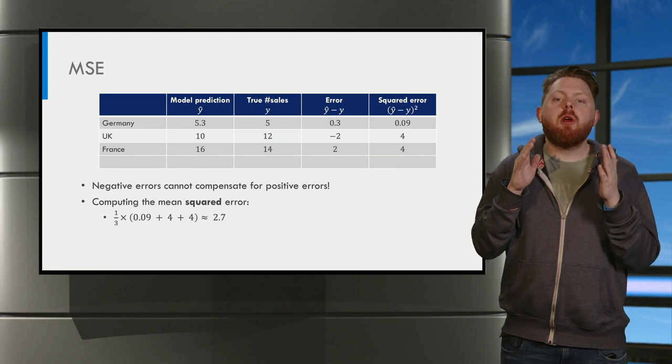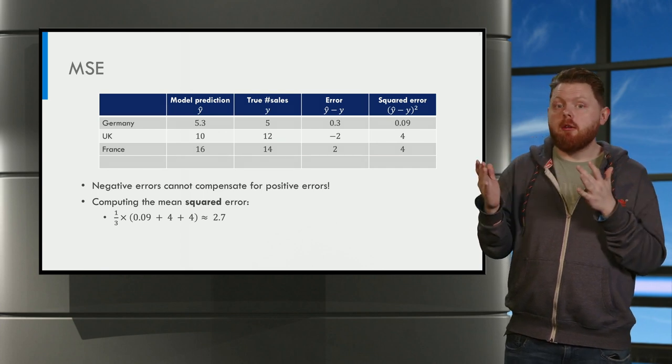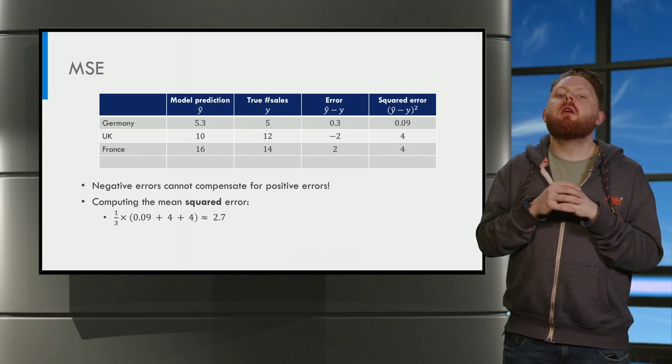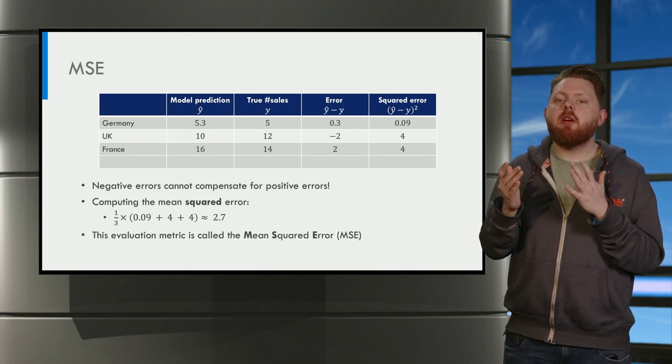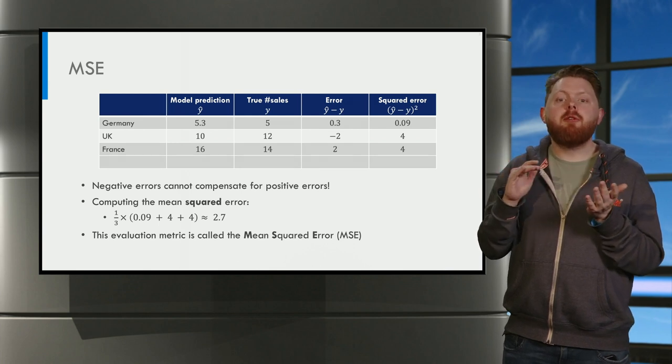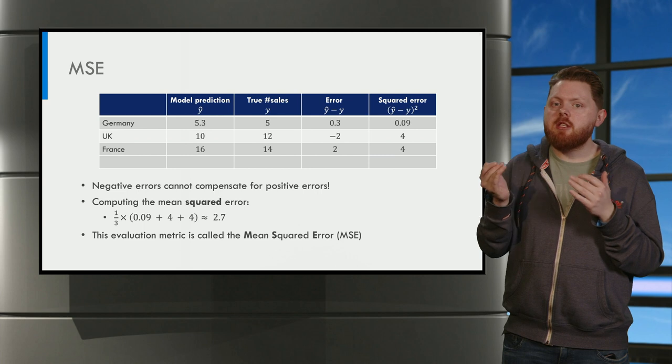If we compute the mean squared error, we find it is approximately 2.7. This evaluation metric is called the mean squared error, which is often abbreviated as the MSE.